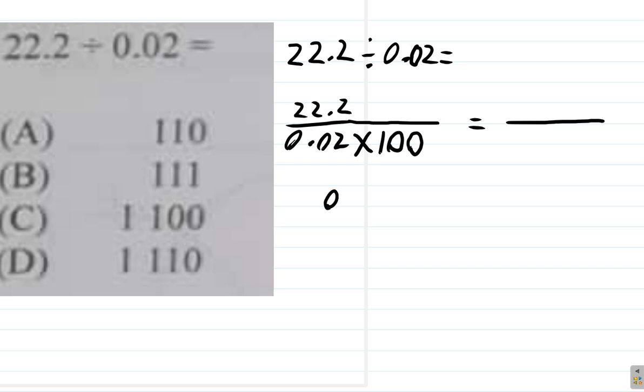When you multiply by 100, 0.02 becomes, if you move the point two places to the right, you get 2.0, which is just 2.